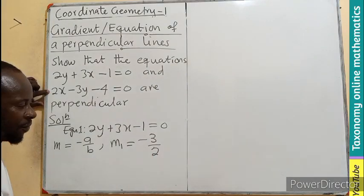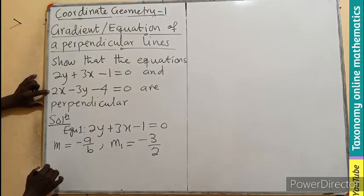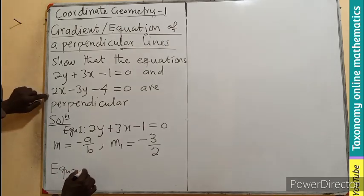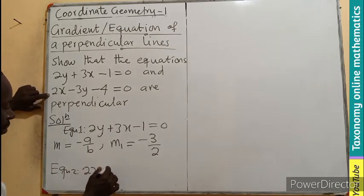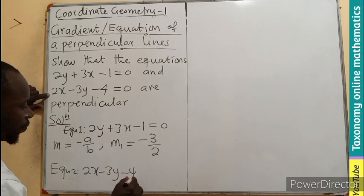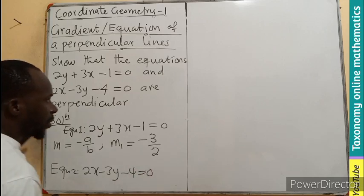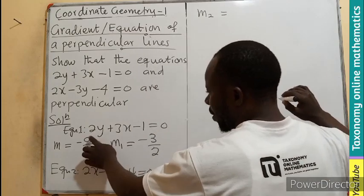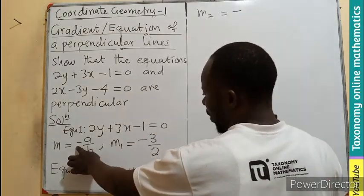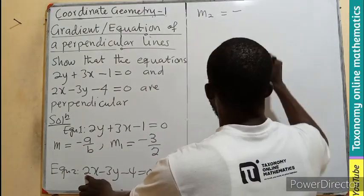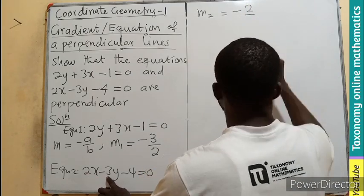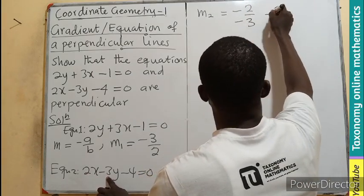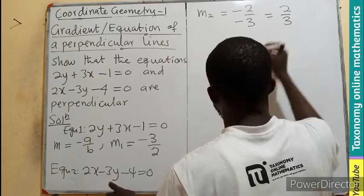And that gives us negative 3 on 2. Then for the equation 2, I will be having 2x minus 3y minus 4 equals to 0. Then the gradient 2 will be minus A. And what is the A? The number in front of X. So, 2 divided by this. That will be negative 3. So, I will be having 2 on 3.